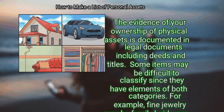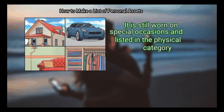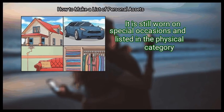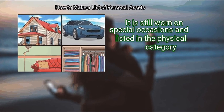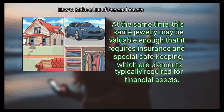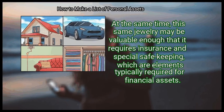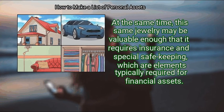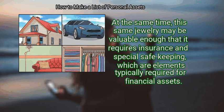Some items may be difficult to classify since they have elements of both categories. For example, fine jewelry may be family heirlooms passed down from generation to generation. It is still worn on special occasions and listed in the physical category. At the same time, this same jewelry may be valuable enough that it requires insurance and special safekeeping, which are elements typically required for financial assets.